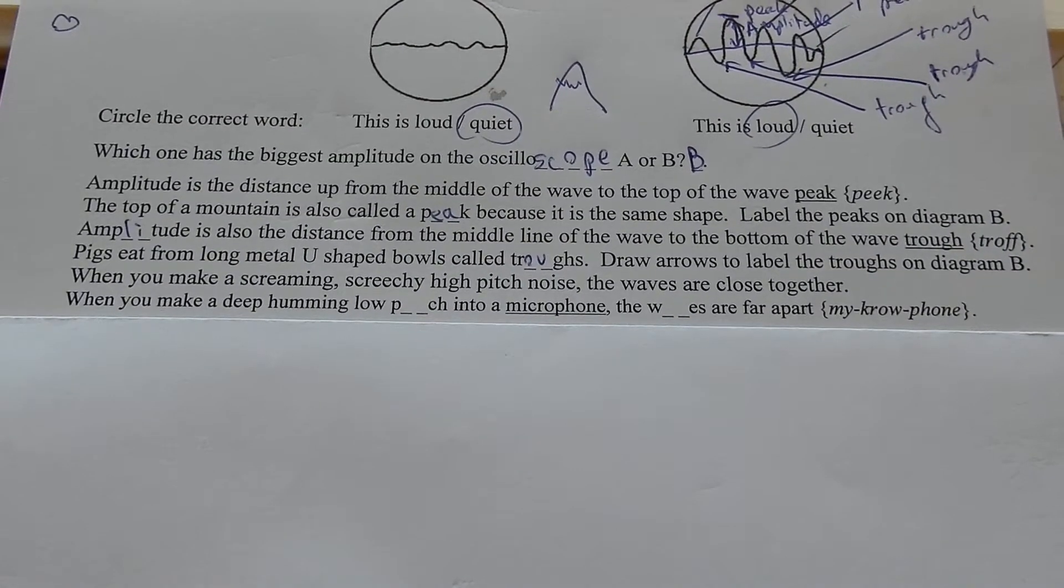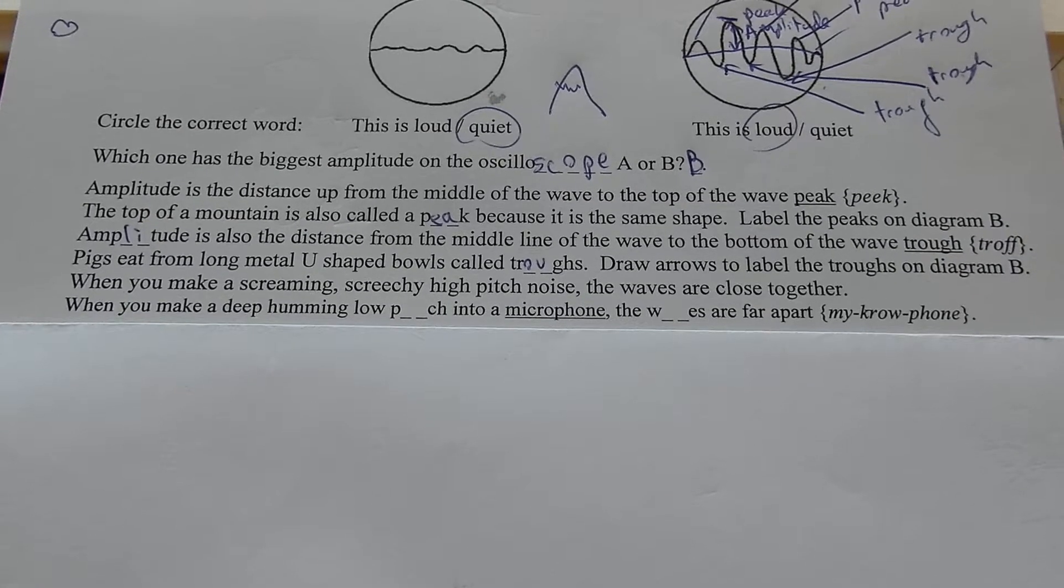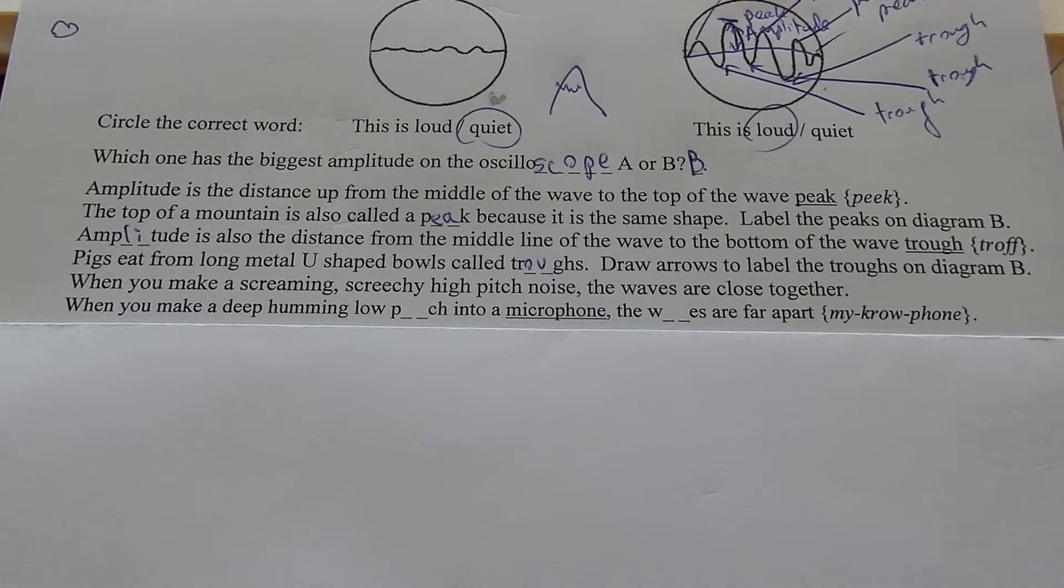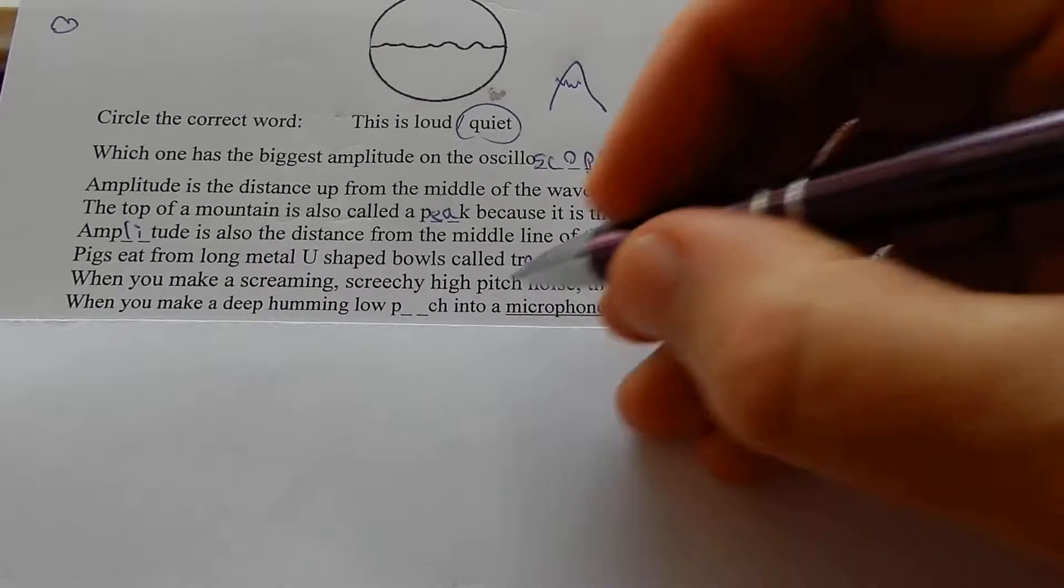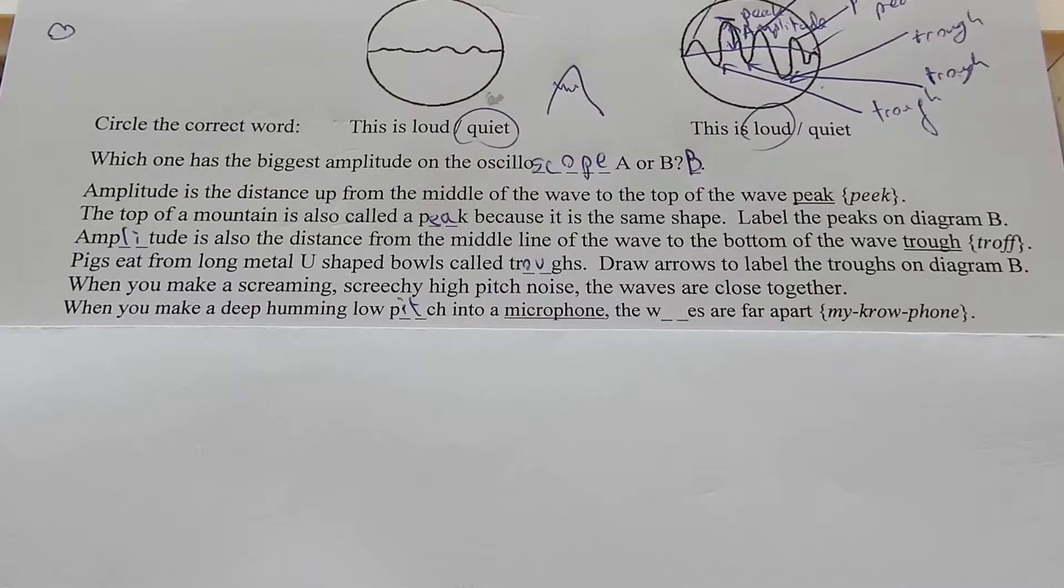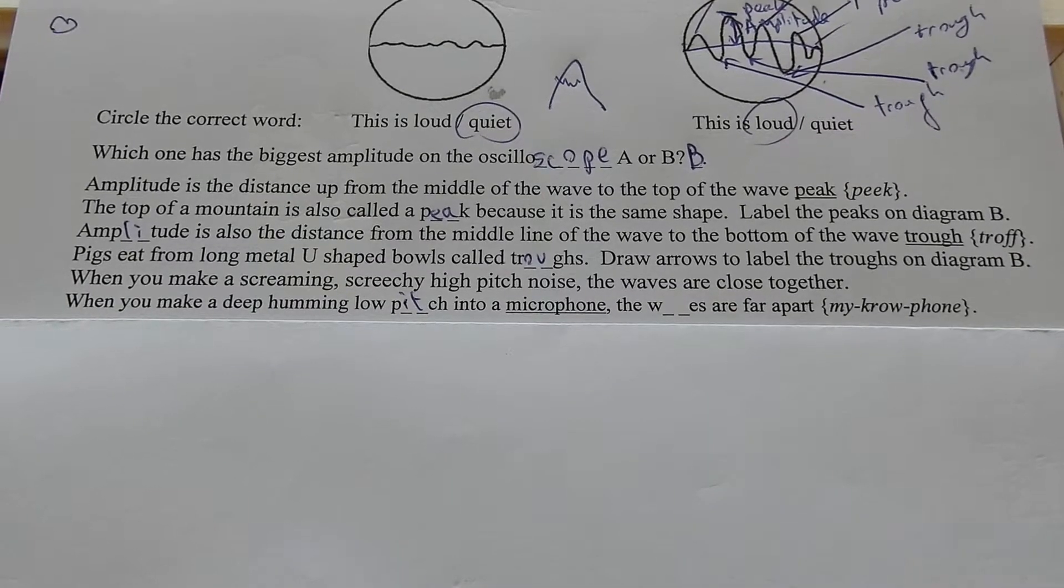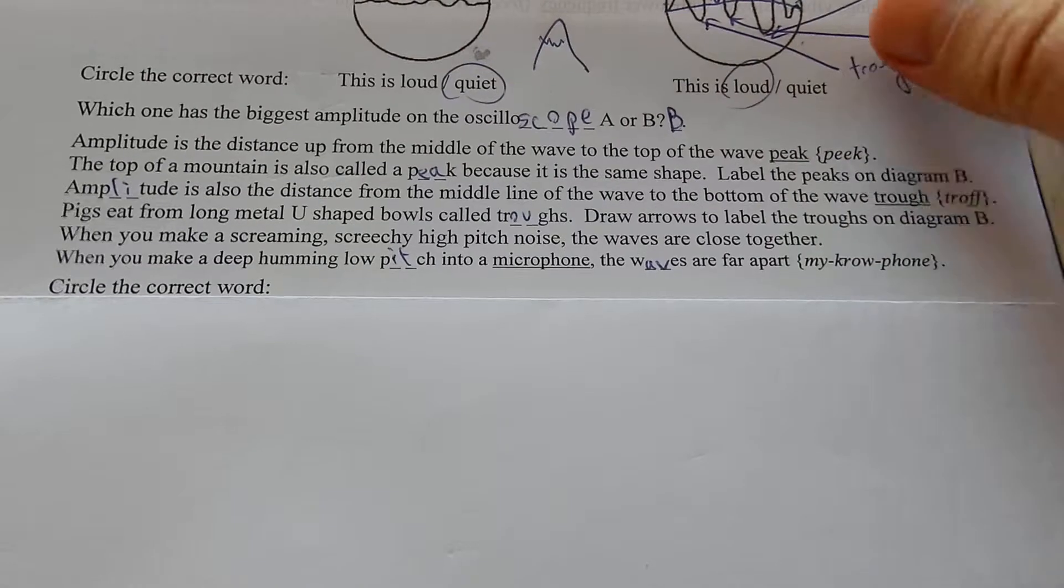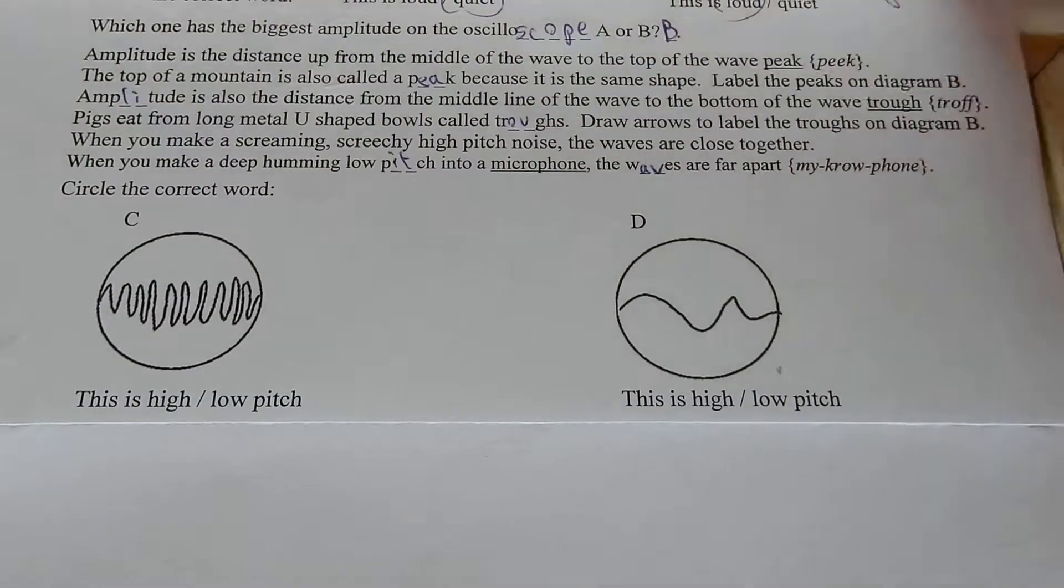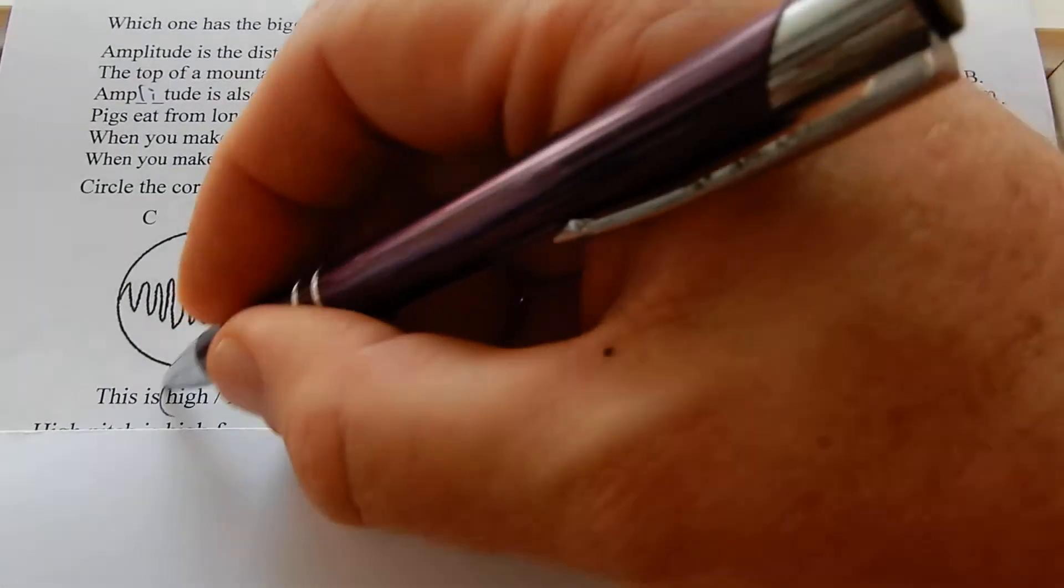When you make a screaming screechy high-pitched noise, the waves are close together. When you make a deep humming low pitch into a microphone, the waves are far apart. Circle the correct word.